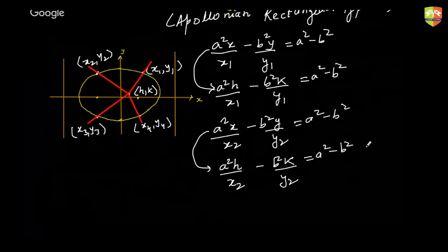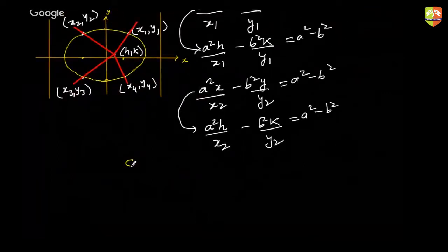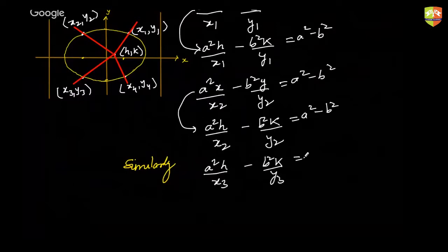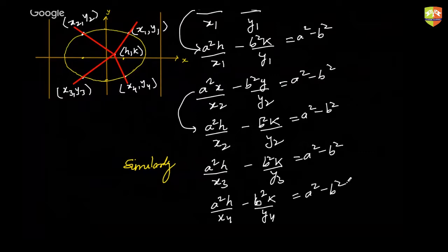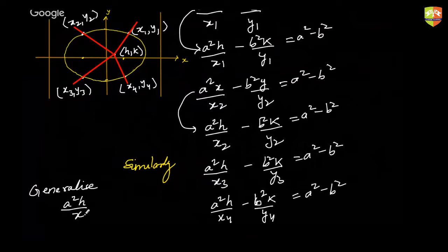In a similar way, a²h/x₃ − b²k/y₃ = a² − b² will also be true, and a²/x₄ − b²k/y₄ = a² − b² will also be true. So if I have to represent a curve on which (x₁,y₁), (x₂,y₂), (x₃,y₃), and (x₄,y₄) all lie, I just need to generalize — wherever x₁y₁ etc. are written, I replace them with x and y.